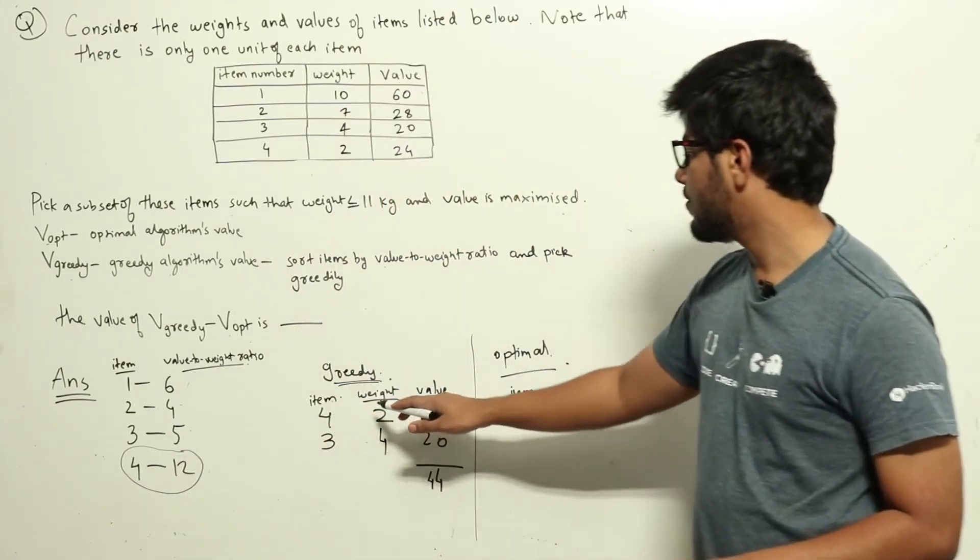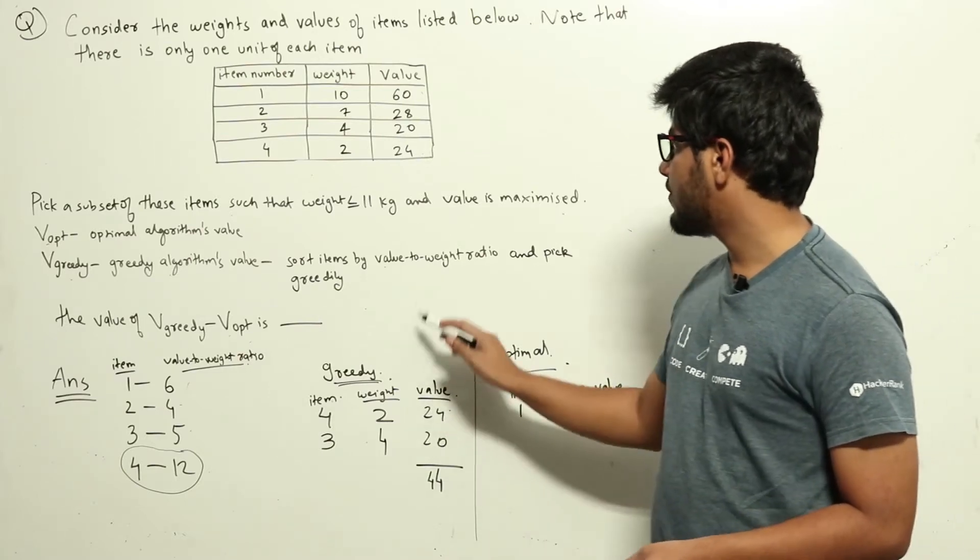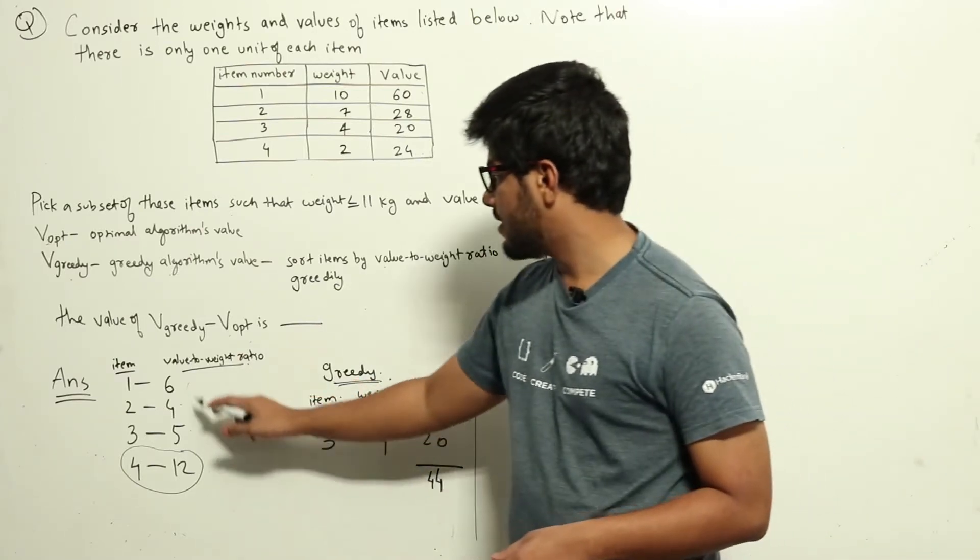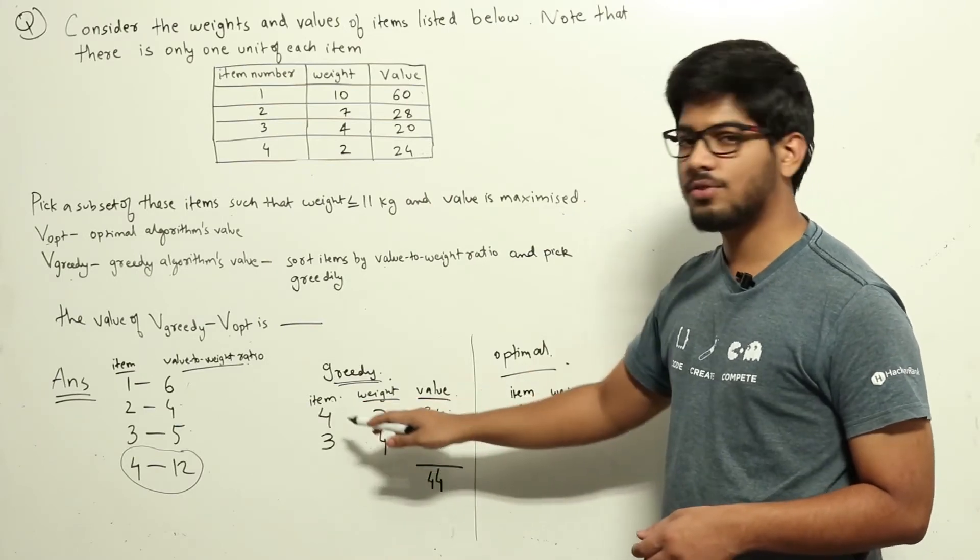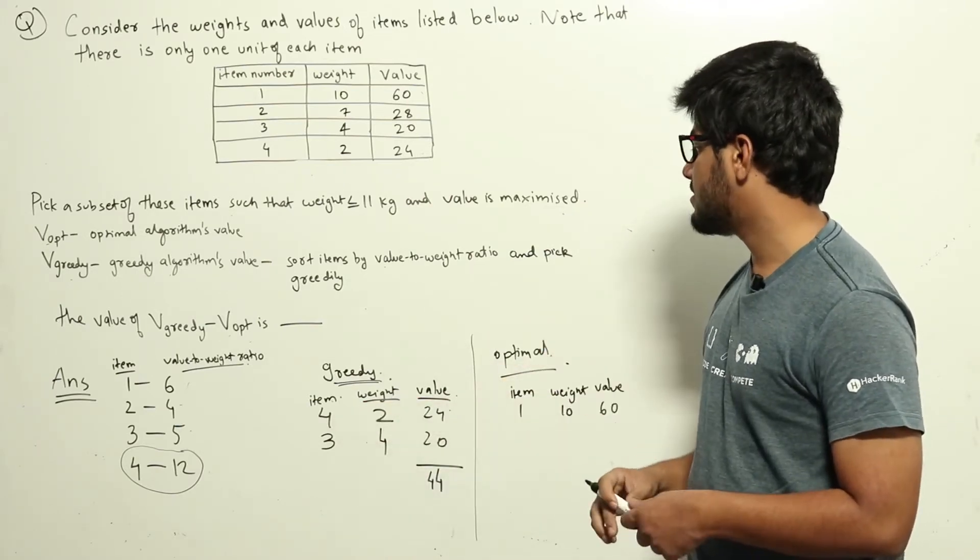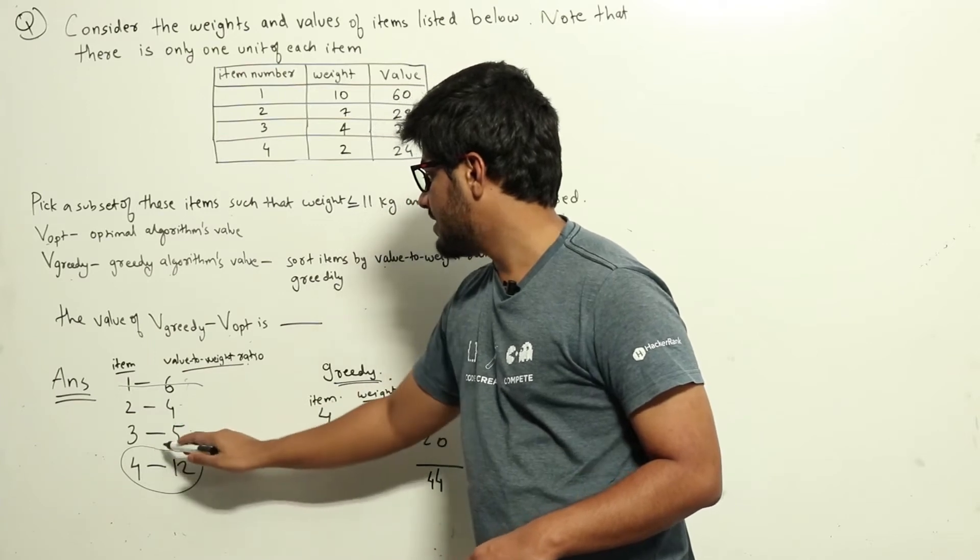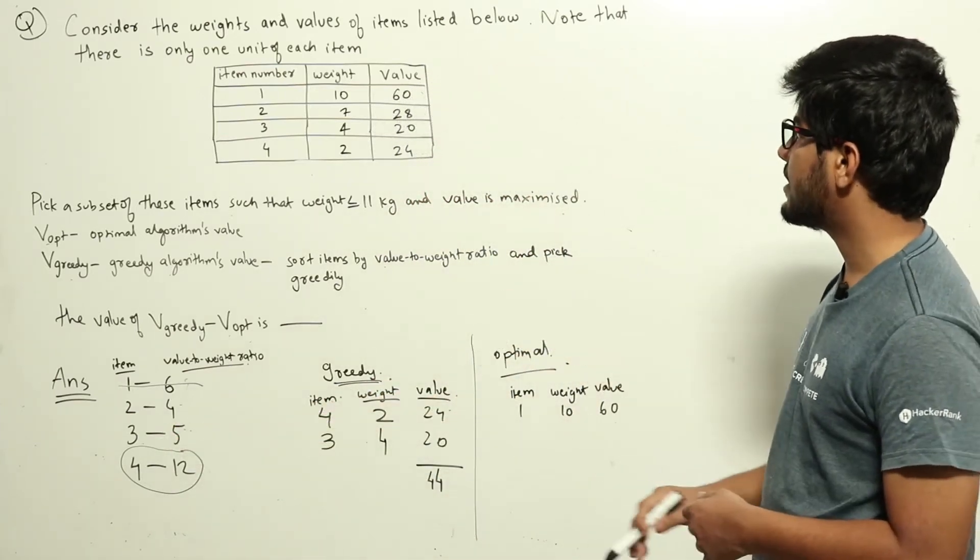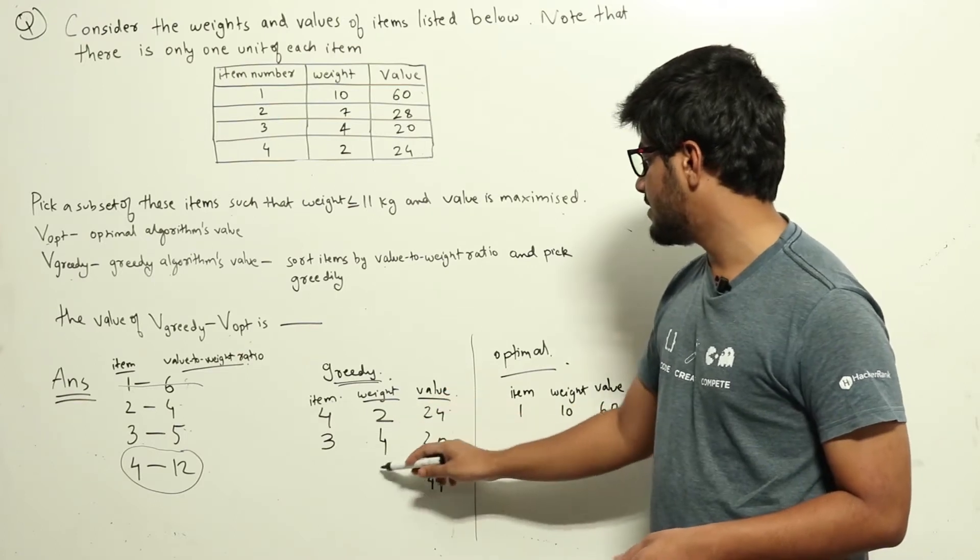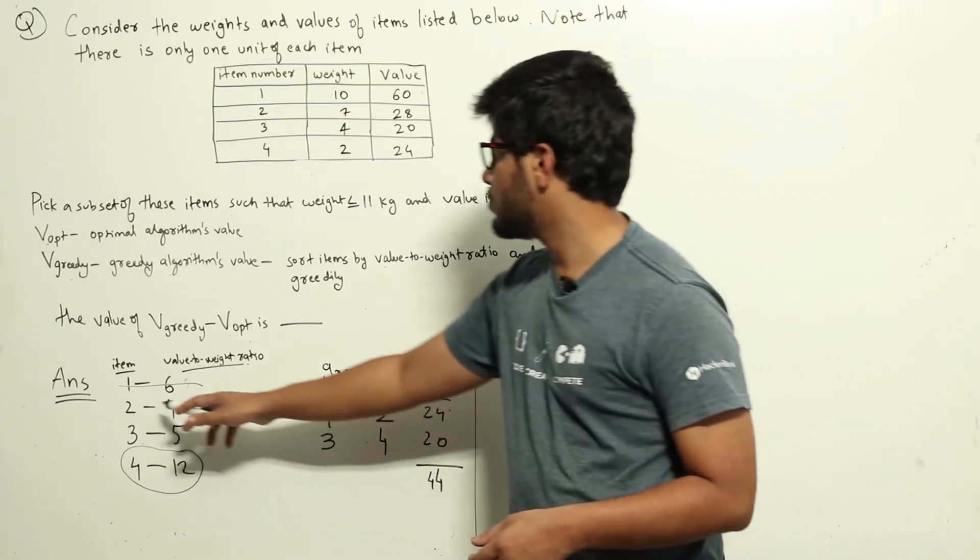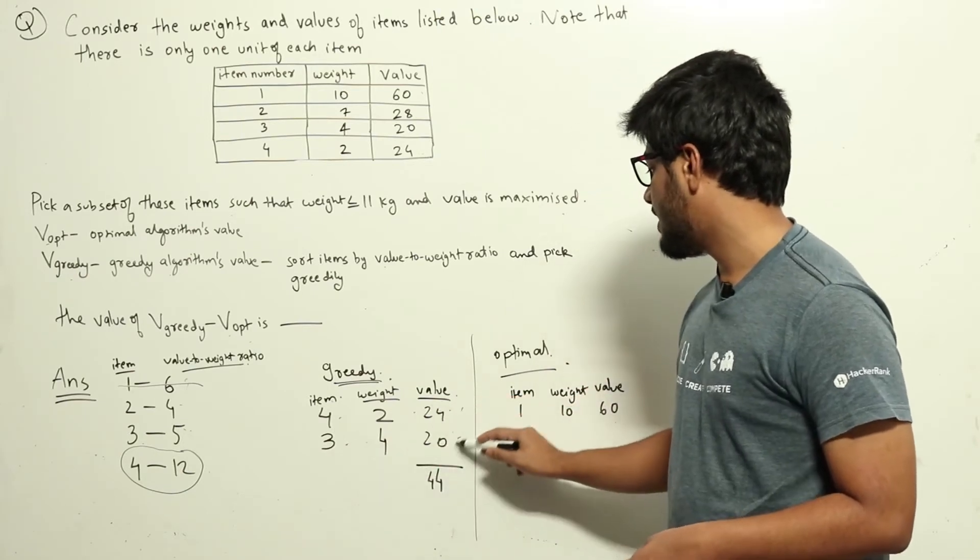So the highest value-to-weight ratio is by item 4, so we'll pick that item. Item 4 has weight 2, which is less than 11, and it adds a value of 24. Now the remaining weight is 9. The second item in this list is item 1 with ratio 6, but item 1 has weight 10, and we've already added item 4, so only 9 kg is available. We can't add item 1. After that, the next one is item 3 with ratio 5. Item 3 has weight 4 and adds value 20. We can add that. The remaining weight is only 5. The next item is 2, but it has weight 7, so we can't add that.